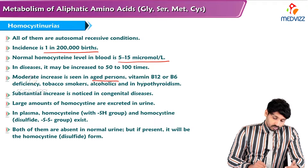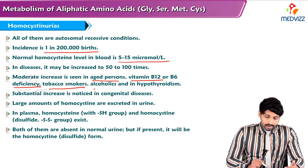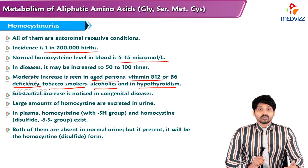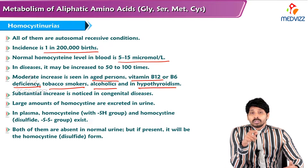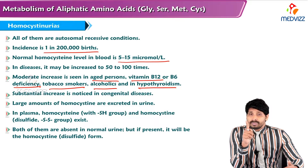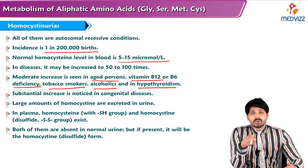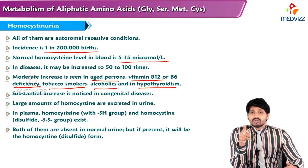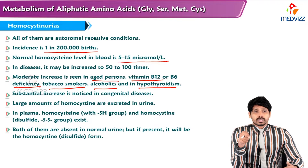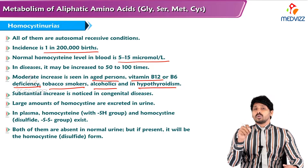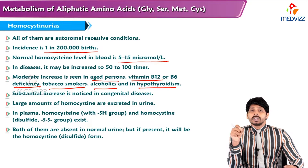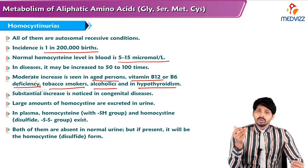A moderate increase is seen in aged persons, vitamin B12 or B6 deficiency, tobacco smokers, alcoholics, and in hypothyroidism. We have seen already in methionine metabolism the crucial role of vitamin B12 and B6. B12 is required for conversion of homocysteine to methionine, and B6 is required for conversion of homocysteine to cysteine. So these water-soluble vitamin deficiencies lead to higher homocysteine accumulation and higher homocystinuria.